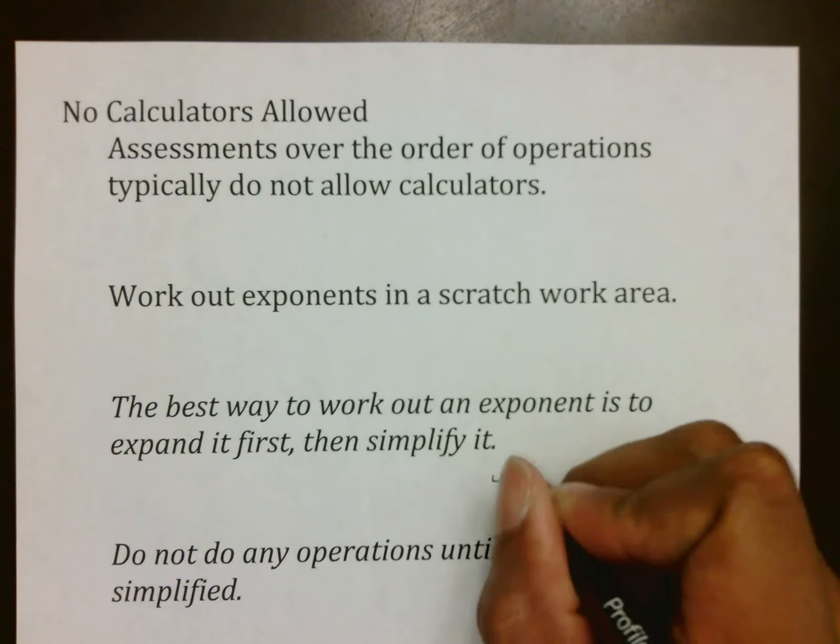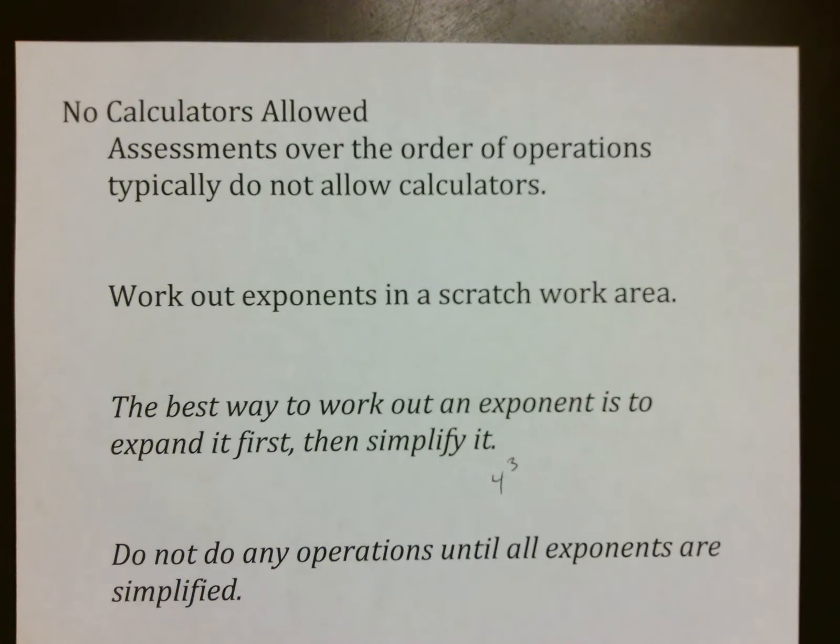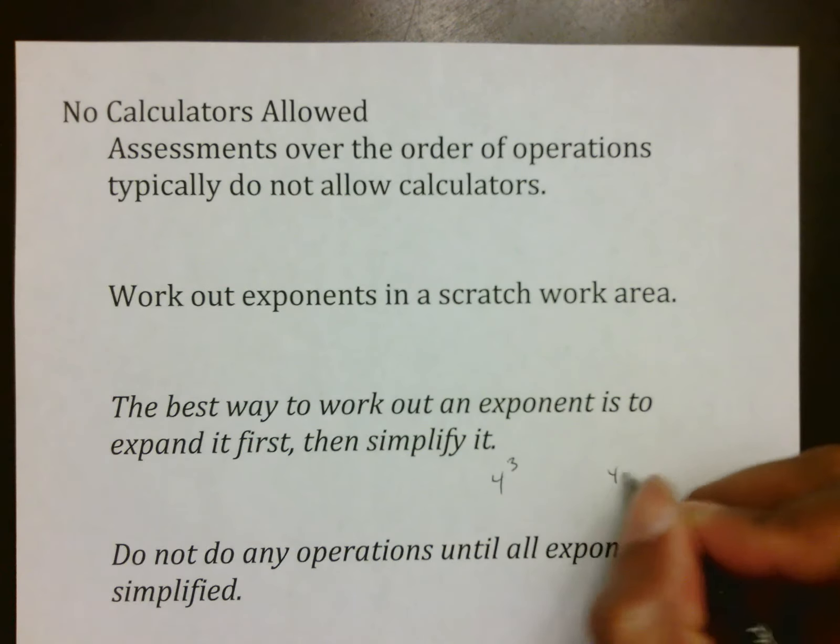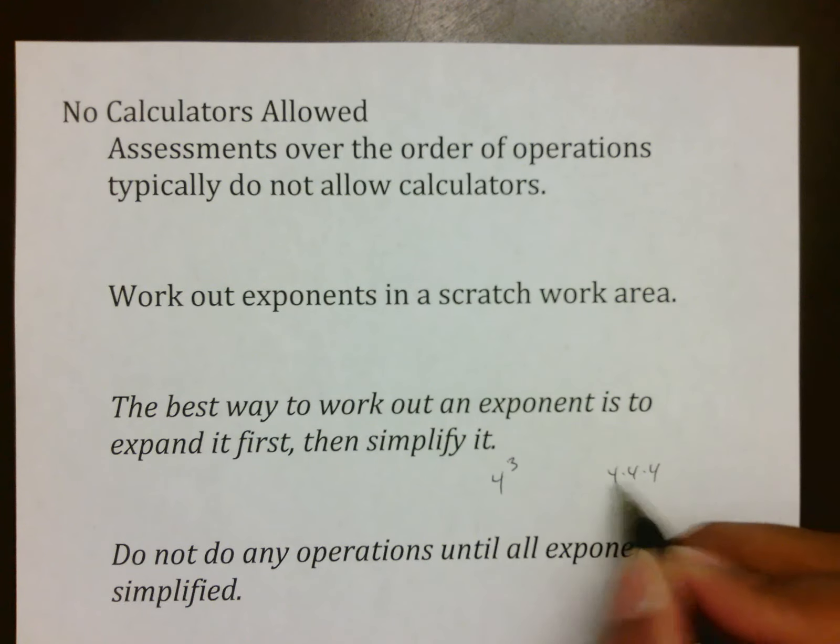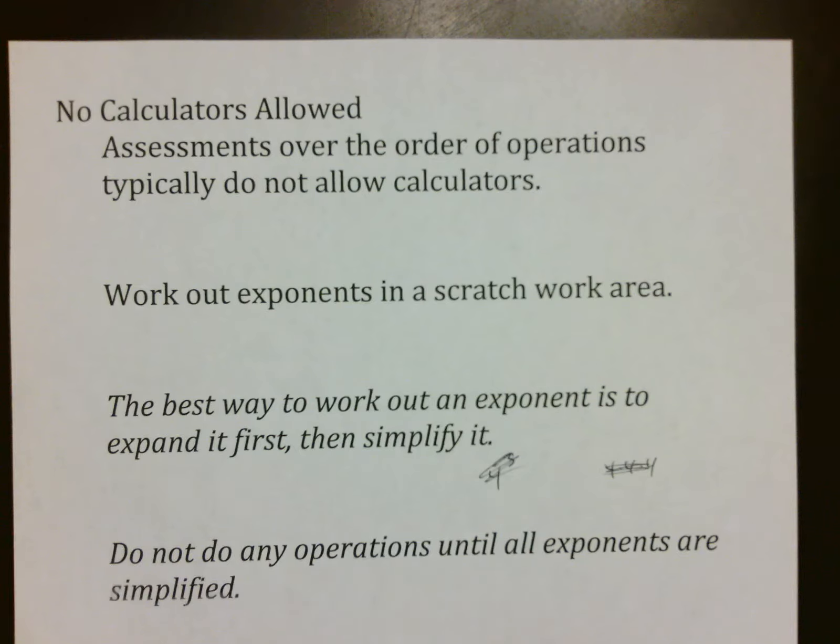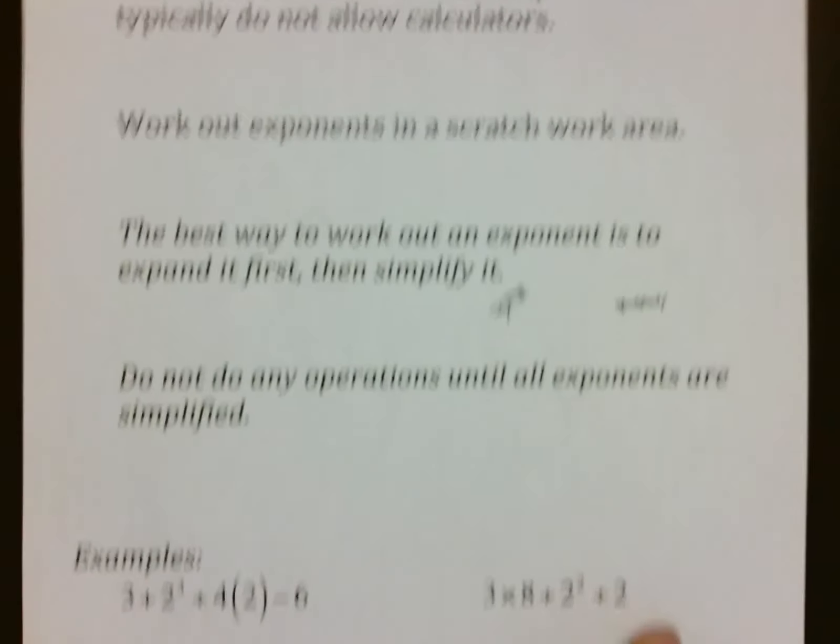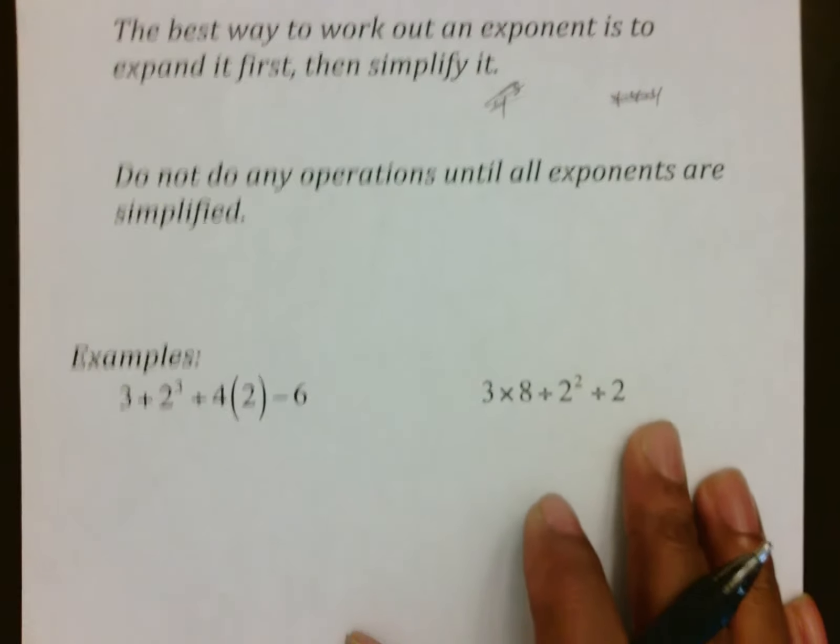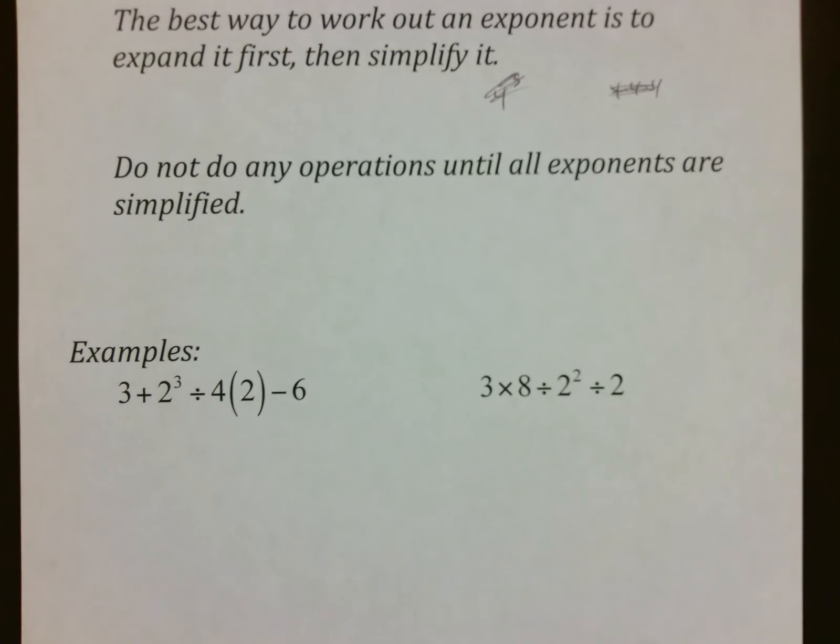For example, if I have four to the third, the first thing people think is 12. But if I go off to the side and expand it, 4 × 4 is already 16, so I know it can't be 12 and I can make sure I get the right answer. So when you work it out, the best way to do it is to expand it. Do not do any other operations until your exponents are simplified because that would be breaking the rules of your lunch line etiquette, so to speak.